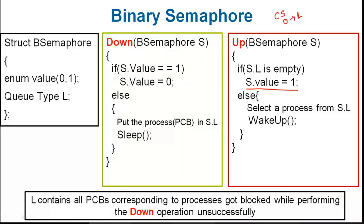If the queue is empty, we give the semaphore value back to 1. Otherwise, it means some processes are waiting in the queue — they performed the down operation and are waiting. Let's say those processes are A, B, C, D. If these four processes are waiting in the queue and the queue is not empty, we take a process from the queue and send it to critical section execution. We don't change the semaphore value in that case since another process directly takes over the critical section.